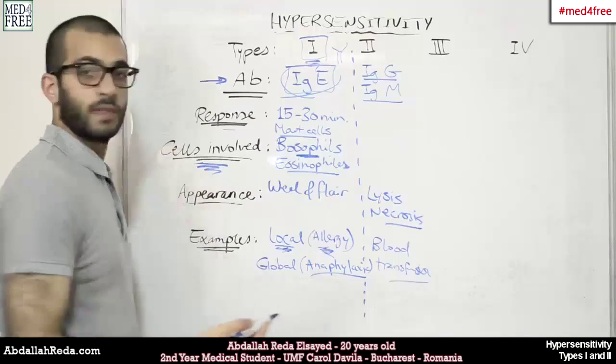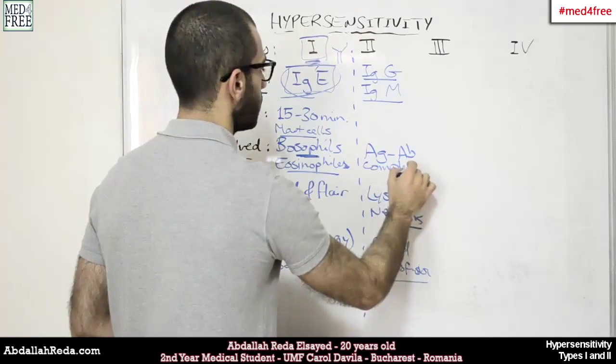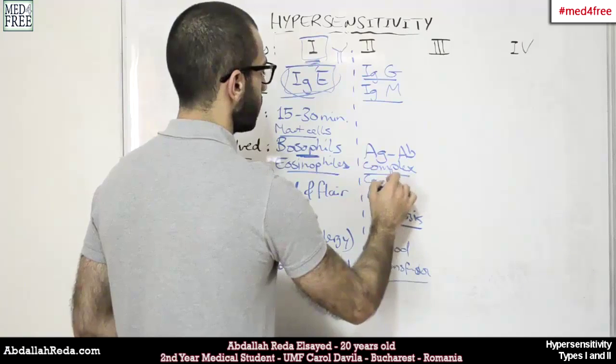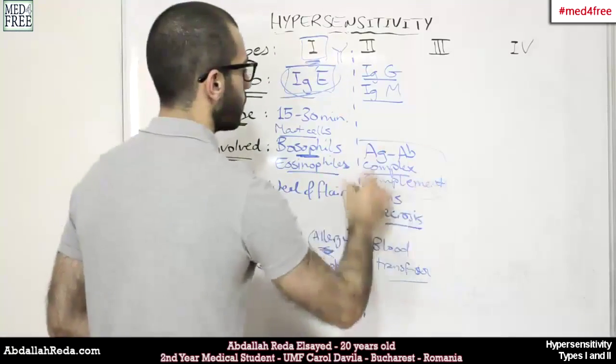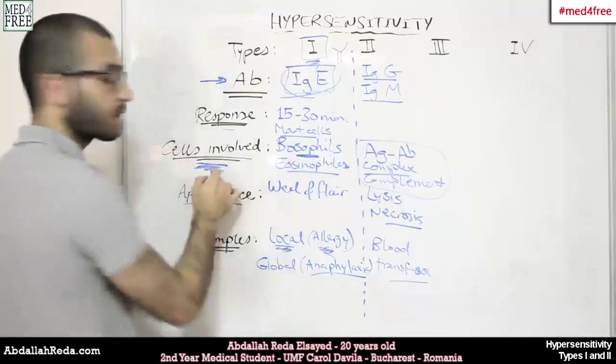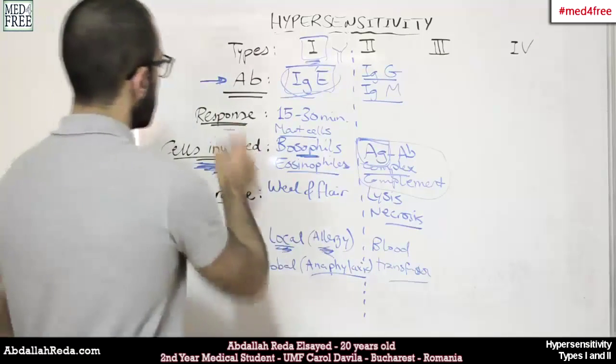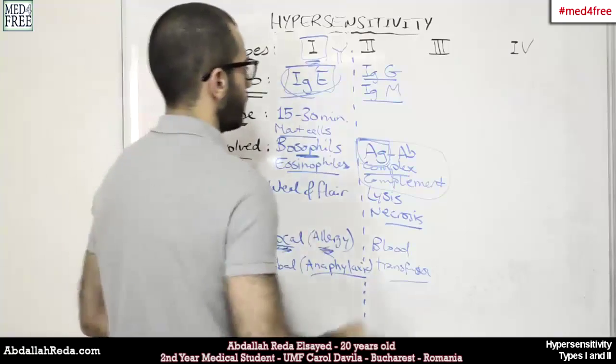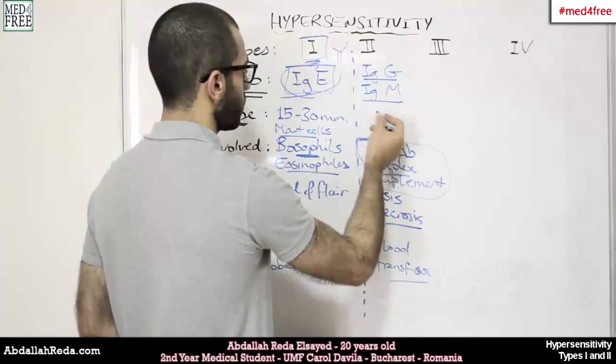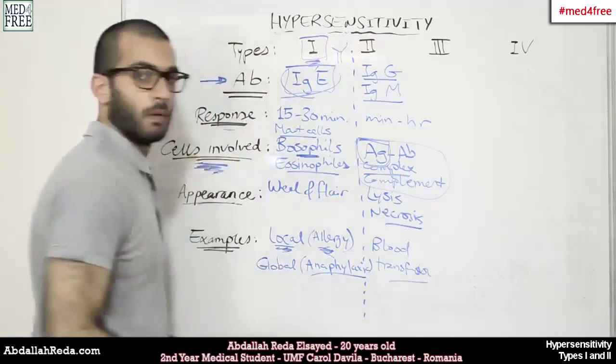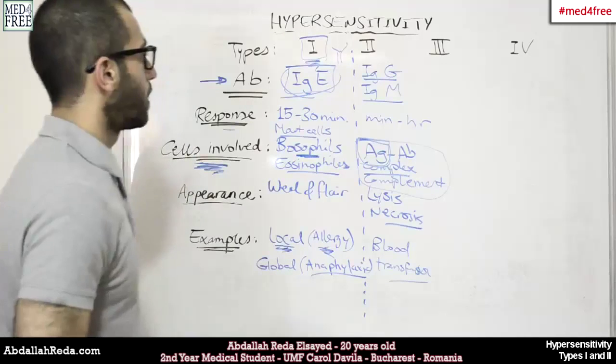And the cells involved, as we mentioned, we have antigen-antibody complex and the complement. These are not cells, but this is the part which is involved with the cells that are expressing the antigens. The response would be a little bit longer than the first type of hypersensitivity. So, we would have from minutes to an hour. This is the second type of hypersensitivity.